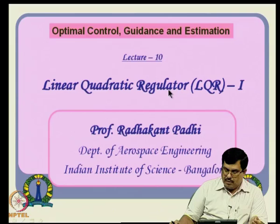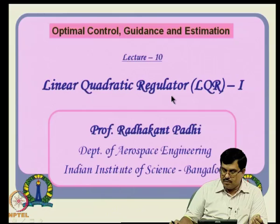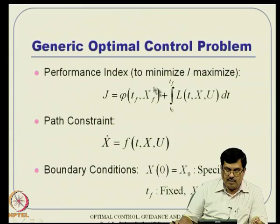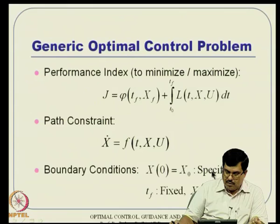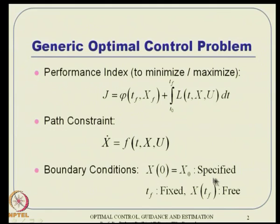We will see that and then proceed further with some extensions and proofs in subsequent lectures. Let us understand what this LQR problem is. The generic optimal control problem, as discussed many times before, has a cost J that takes the form of a terminal penalty phi plus a path penalty. Along with that there is a path constraint — the system dynamic equation — as well as boundary conditions. We will typically consider X(Tf) as free, but some problems can have it as a hard constraint.